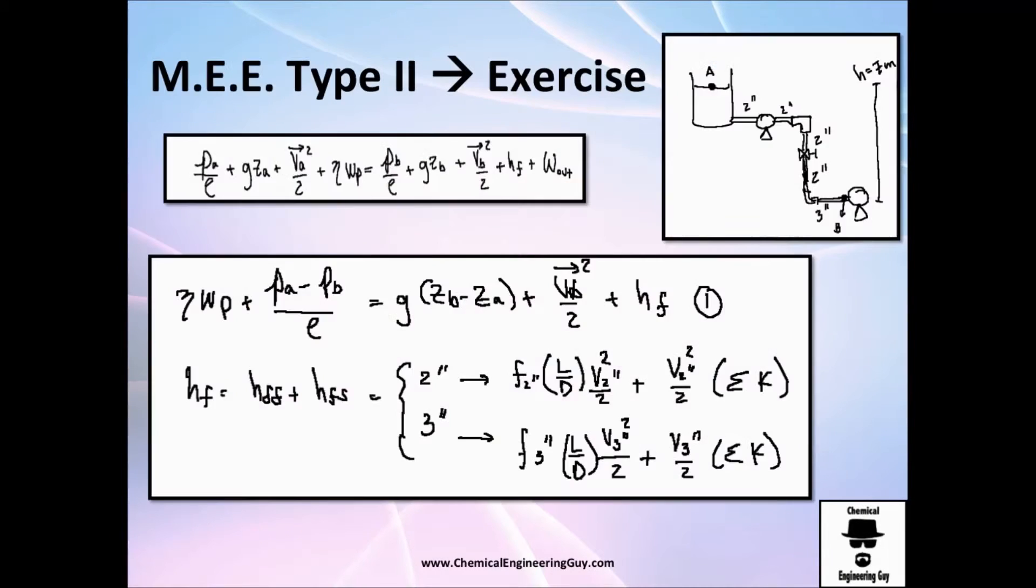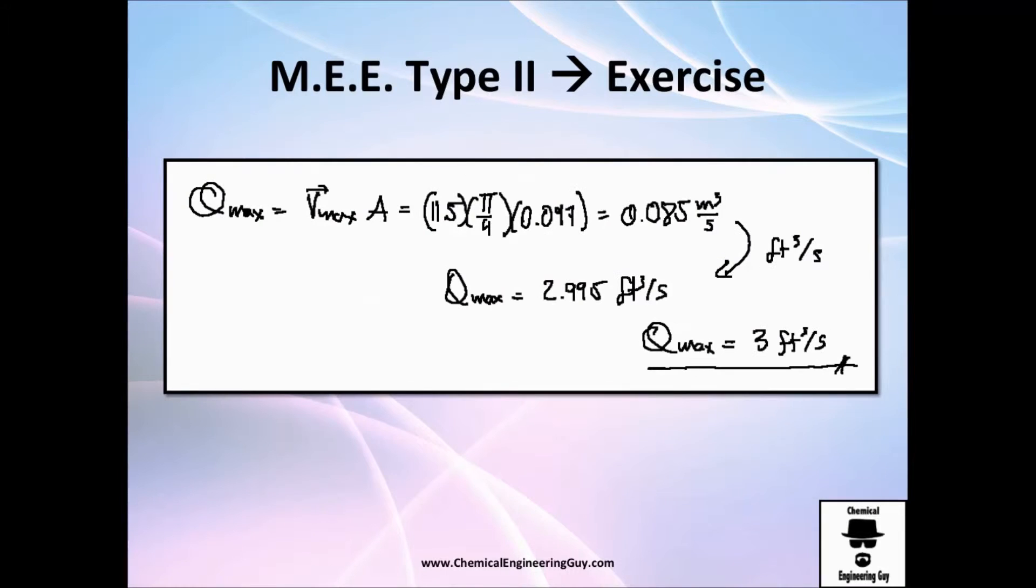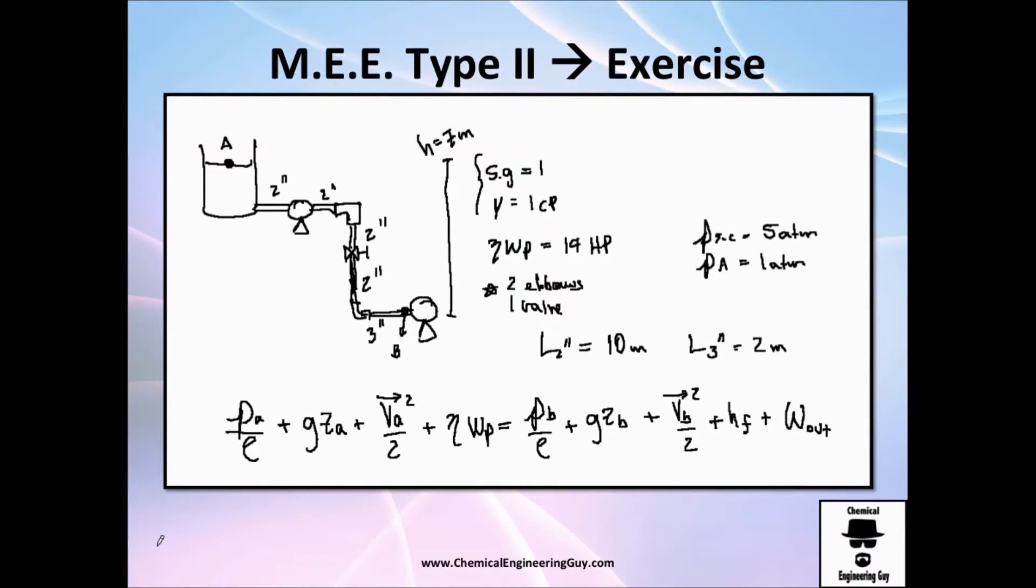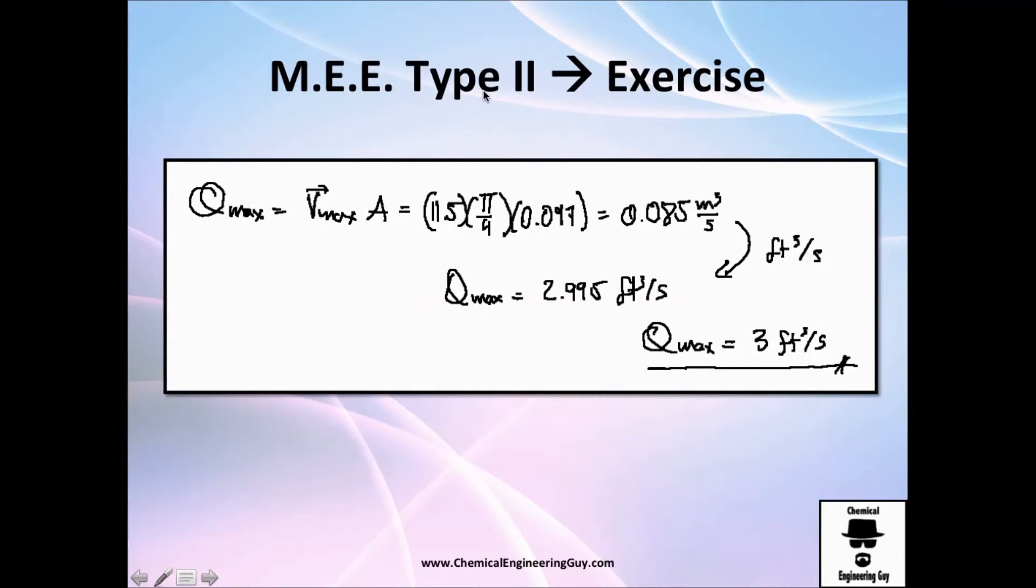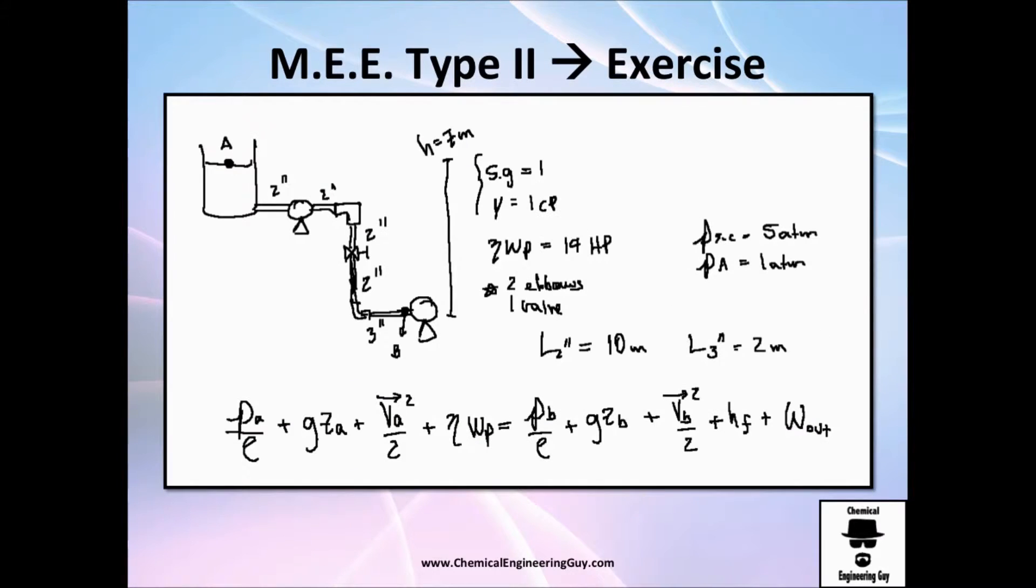This is another exercise. The last exercise was this one right here, to calculate the volumetric flow rate. We found out to be it 3 cubic meters per second. But what will happen if we have two pipes, for example, 2 inch pipe right here, and 3 inch pipe right here. We got the specific gravity, we got the viscosity, we got the power of the pump, we got the suction in the inlet and outlet. We got the length of all the pipes, and we know all the accessories, and also the height of the pumps.